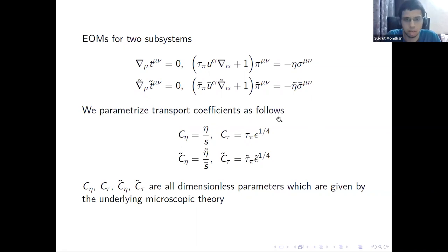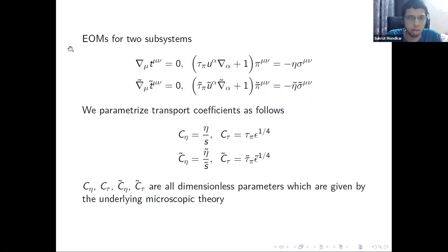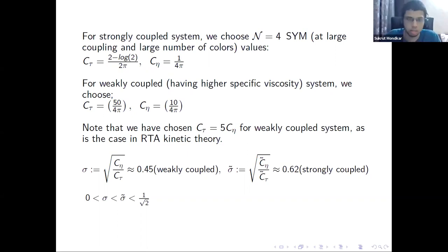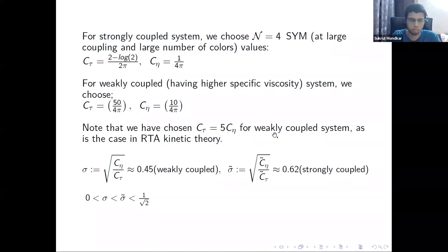We use the following parameterization for transport coefficients, where C_eta and C_{tau_pi} are dimensionless parameters containing the transport coefficients, and similarly tilde versions for the other system. For the strongly coupled system, we choose transport coefficients corresponding to N=4 super Yang-Mills: C_{tau_pi} = -log(2)/(2*pi) and C_eta = 1/(4*pi). For the weakly coupled system, we choose a larger specific viscosity (larger C_eta compared to the strongly coupled system), with the relation C_{tau_pi} = 5*C_eta, which is also the case for RTA kinetic theory.